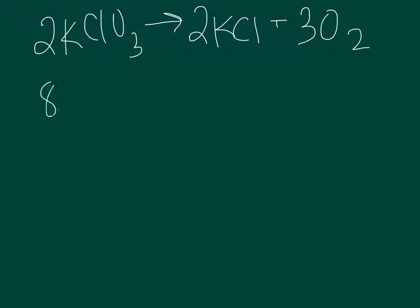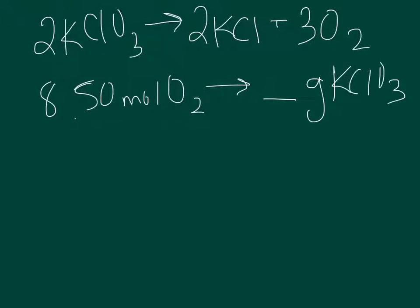I start with 8.50 moles of oxygen (O₂) and need to figure out how many grams of KClO₃ are required. To do this, I need to go from moles of O₂ to moles of potassium chlorate, and then from moles of potassium chlorate to grams of potassium chlorate.